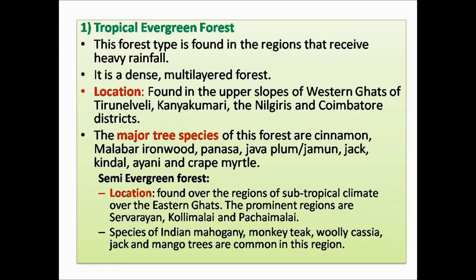The first type is the Tropical Evergreen Forest. Evergreen means the leaves of the trees are evergreen throughout the year because they do not shed their leaves during any season. These forests are found in regions that receive heavy rainfall — the average rainfall is more than 200 cm. It is a dense, multi-layered forest, meaning you can see trees, shrubs, and creepers at various heights from bottom to top.